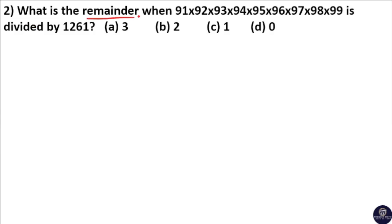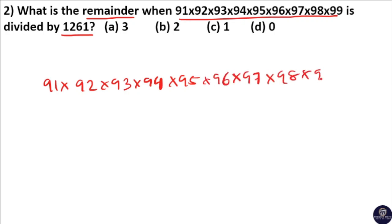What is the remainder when the product of 91 × 92 × 93 × 94 × 95 × 96 × 97 × 98 × 99 is divided by 1261?